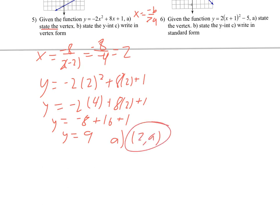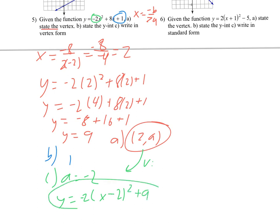For part B, the y-intercept is actually really easy to see here — it is 1. It's always that c value. And then for part C, write it in vertex form. I already have my vertex, so that's good. I'm going to need the a value here — a is going to equal negative 2, the same as before. So I'm going to say negative 2 times x minus 2, because I always switch the x value of the vertex, and then that's squared, and then we put the plus 9 from the vertex outside.